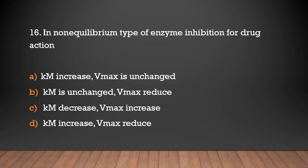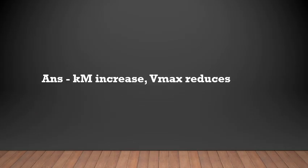In non-equilibrium type of enzyme inhibition for drug action: Km increases, Vmax is unchanged; Km is unchanged, Vmax reduces; Km decreases, Vmax increases; or Km increases, Vmax reduces. The answer is Km increases, Vmax reduces.